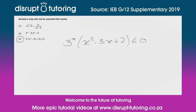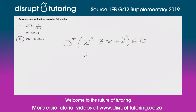I'm going to focus on the remaining term. Dropping the 3 to the x, we're left with x squared minus 3x plus 2, and we know that is less than or equal to zero.